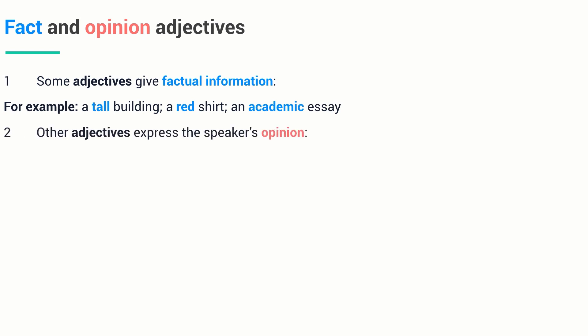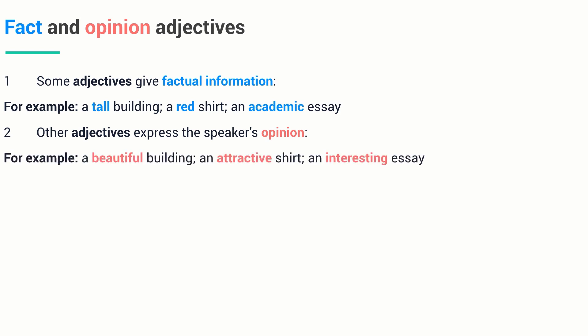On the other hand, opinion adjectives are the ones which express the speaker's opinion. For example, a beautiful building, an attractive shirt, an interesting essay. The three adjectives beautiful, attractive, and interesting are called opinion adjectives because they show the thought or ideas of the speaker.